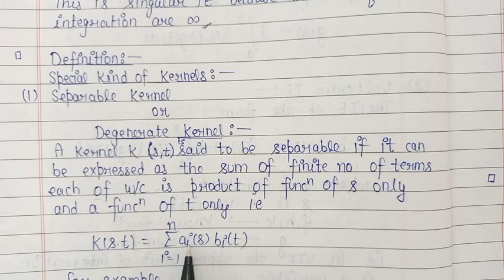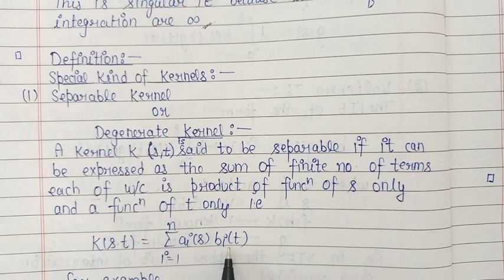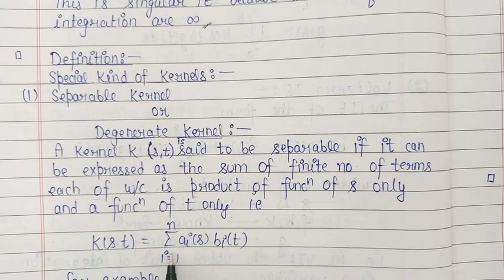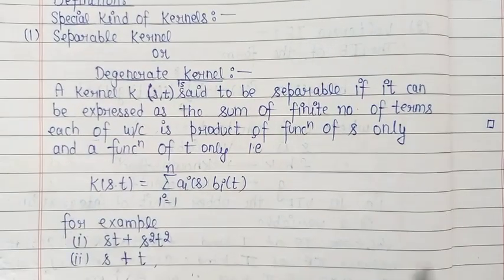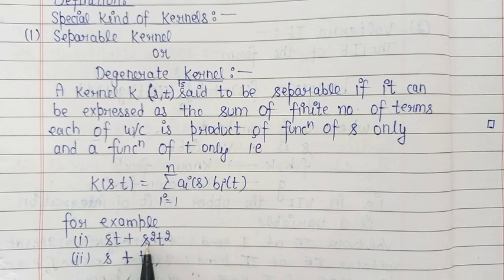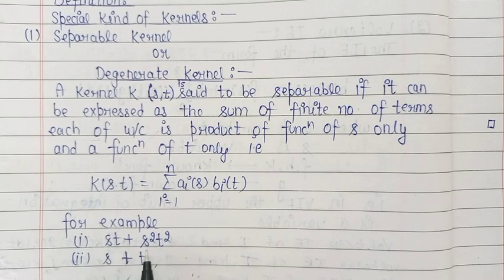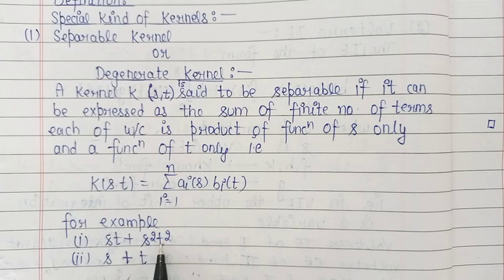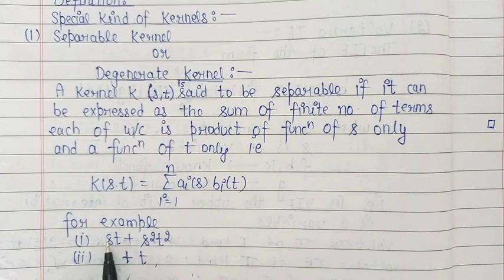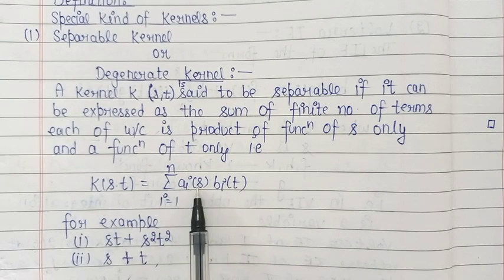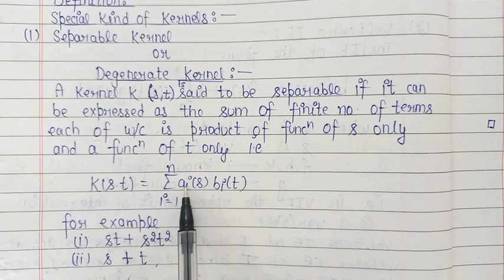Here, a_i(s) are functions of variable s only, and b_i(t) are functions of variable t only. So if we can represent a kernel in this form, then the kernel is separable or degenerate. For example, the expression st + s²t² represents a separable kernel, as it is a sum of finite terms each being a product of a function of s only and a function of t only. Another example is s + t, where we can consider the functions a_i(s) to be linearly independent.